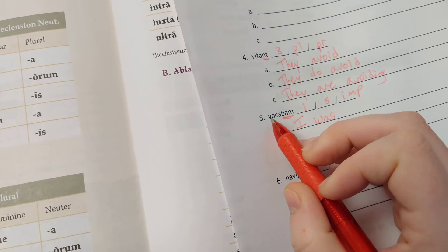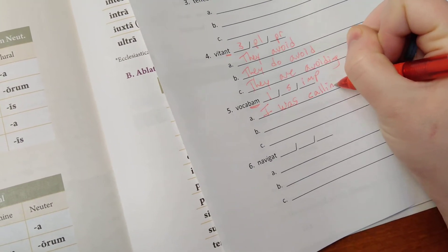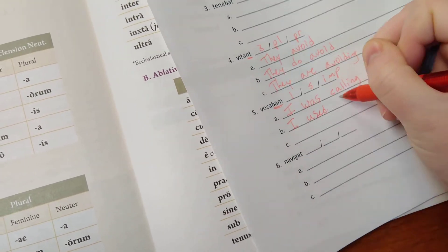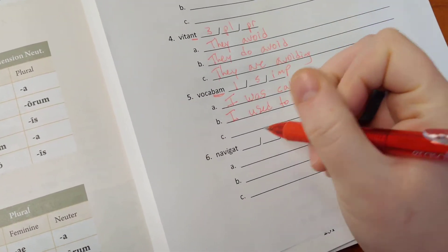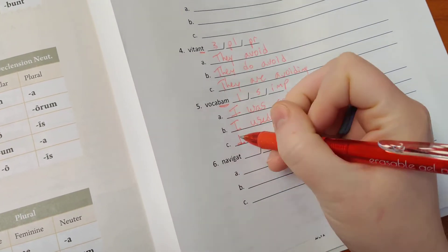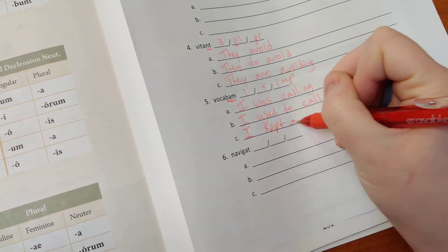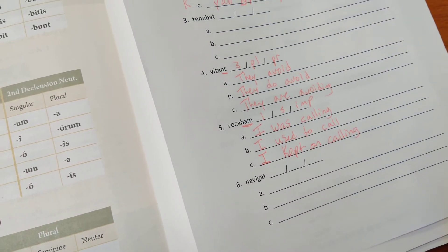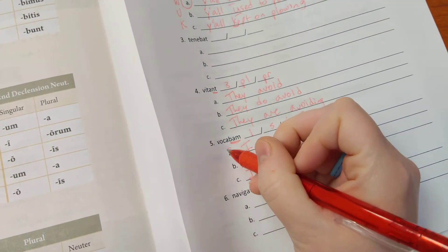Voca comes from voco, which is I call. So I was calling. I, next letter is U, I used to call. And then the final one is I kept on calling.